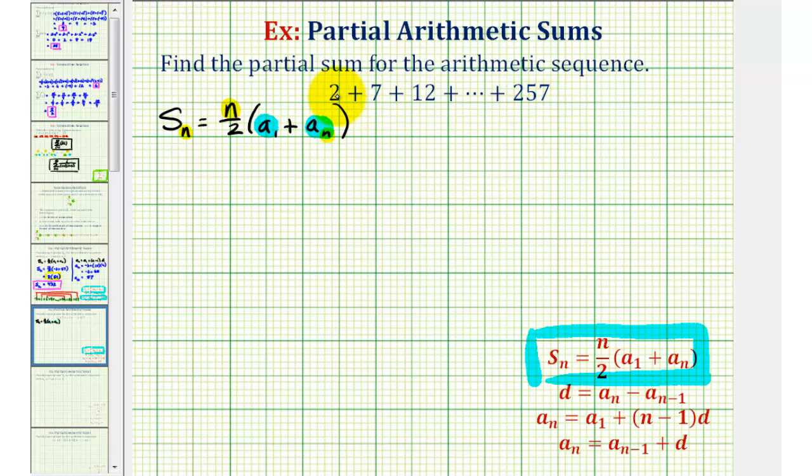So we know a sub one is equal to two, the first term. We know a sub n, the last term, is equal to 257, but notice how we don't know n, the number of terms in this series.